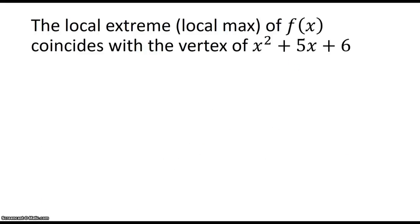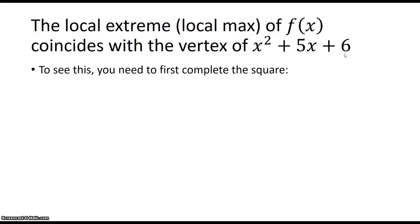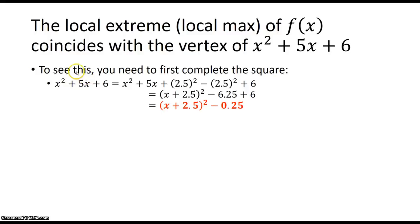The local max of f of x coincides in x-coordinate with the vertex of x squared plus 5x plus 6. To find this, we complete the square. Taking x squared plus 5x, we take half of the middle term — half of 5 is 2.5 — and square it. We add and subtract 2.5 squared, keeping the 6 from the original expression. This gives us (x + 2.5)² minus 6.25 plus 6, which simplifies to (x + 2.5)² minus 0.25.